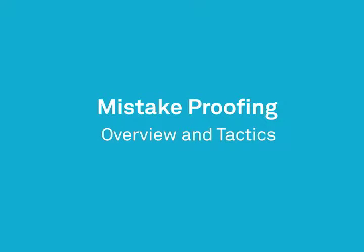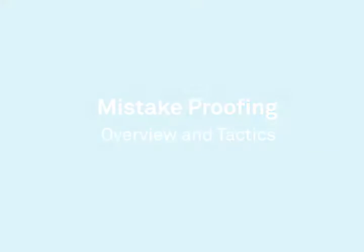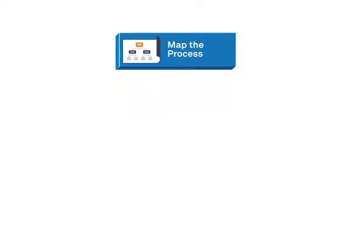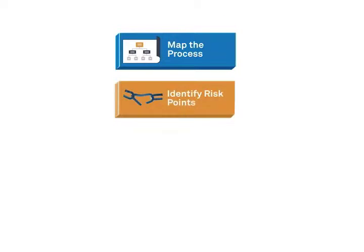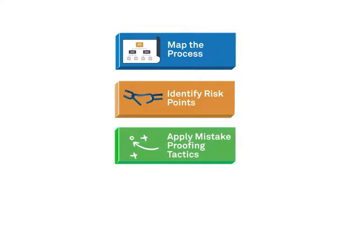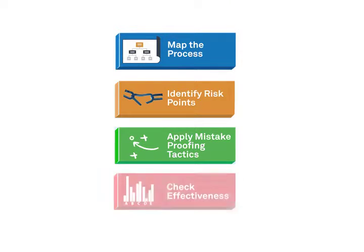The process of mistake proofing breaks down into four main steps: map the process, identify risk points, apply mistake proofing tactics, and check effectiveness.